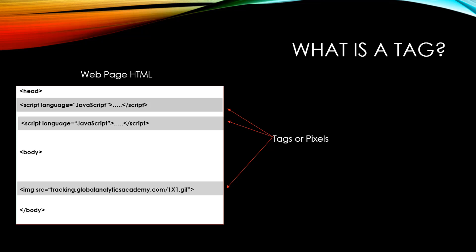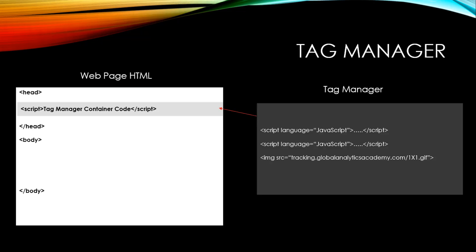Examples of tags are Google Analytics tracking, Facebook Pixel, etc. Tag Manager is a tool that allows you to easily deploy all these tags to your site without having to modify the page code. So instead of putting each pixel on your web pages, you manage them in a tag manager and put the Tag Manager JavaScript code on your web pages. Once that's done, all your tags and pixels can be managed within Tag Manager.